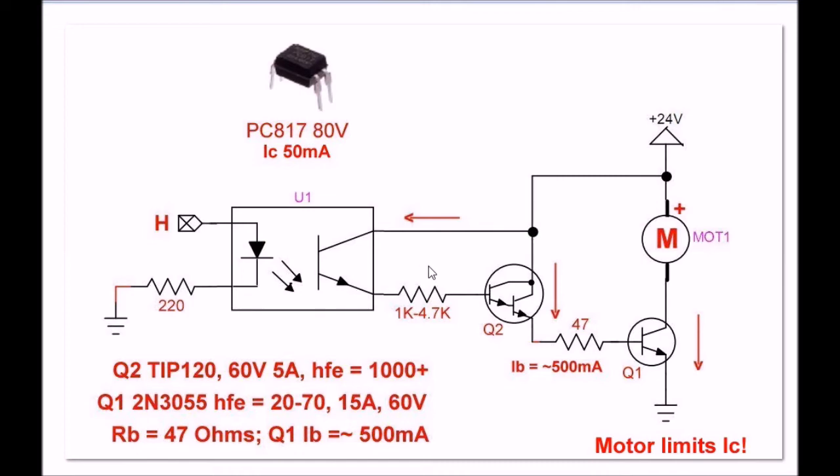The next question becomes, what optocoupler do I want to use? Most optocouplers that I've used in the past, like the 4N25, most are rated for collector currents, collector emitter currents, of no more than 30 volts. Yet Q2 and Q1, as we saw earlier, are rated for 60 volts. So if I went with a 4N25, the circuit is only good for about 30 volts. That'll work for 24, but it seems to make it a lot less flexible.